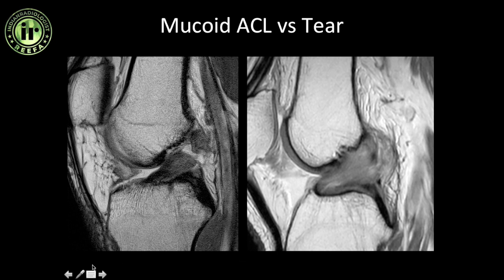Now how do you differentiate a mucoid ACL from an ACL tear? In an ACL tear, if you draw lines along the fibers you will see a complete disruption or discontinuity in the line, and there will be a fluid signal intensity in that region — which is the tear. In a mucoid ACL you can actually identify the fibers all along, so you will not see any disruption of these lines. The lines will appear more fuzzy but you can appreciate them very well.